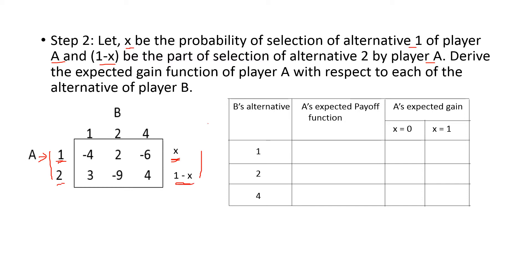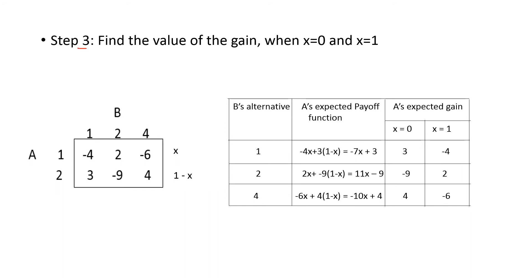Now draw this table: B's alternatives are 1, 2, and 4. The next column is the expected payoff function, which we will find out. Then comes expected gain. You have to substitute X as 0 and X as 1. Draw the same table for all questions: B's alternative, expected payoff function, expected gain, with columns for X equals 0 and X equals 1.